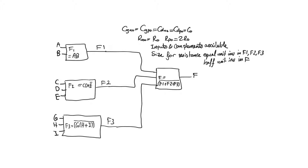Inputs and their complements are available without additional inverters, so you don't have to worry about whether to implement f or f-bar — it is always better to implement f-bar. We are required to size all gates so that the pull-up and pull-down resistance in the worst case equals that of the unit inverter in gates f1, f2, and f3, but equals half that of the unit inverter in gate f.